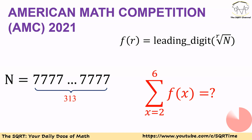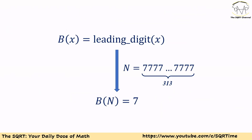Before moving forward to talk about the solution, make sure you pause the video to think about this problem. To solve the problem, let's start with a new notation. Remember, f(r) is defined as the leading digit of the r-th root of N. Now we define b(x) as the leading digit of x.